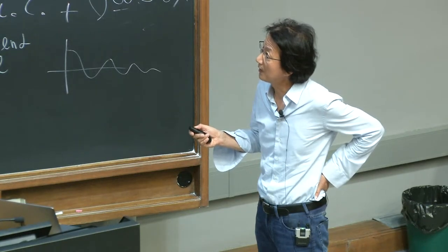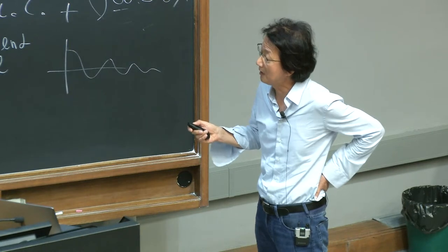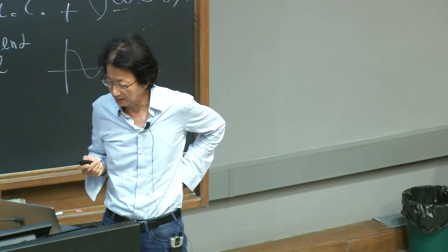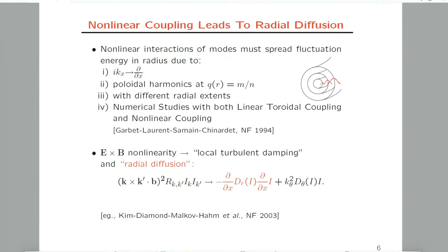If you think about fluctuation sitting on each rational surface where Landau damping is minimal, you can easily accept the notion that nonlinear coupling of different modes can lead to radial diffusion of fluctuation itself. In the simplest nonlinear closure of the E cross B nonlinearity, which is the dominant nonlinearity in plasma dynamics, we usually have only k perpendicular squared times diffusivity nonlinear damping term.